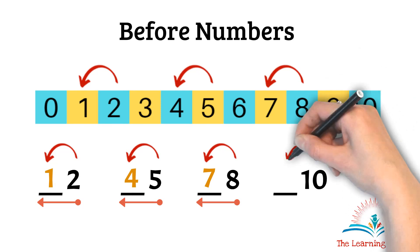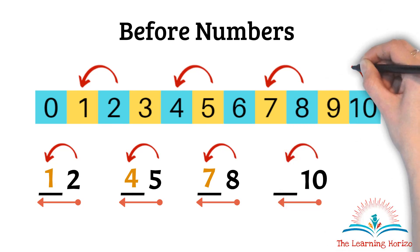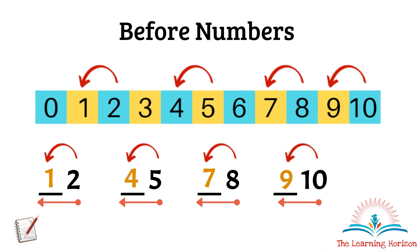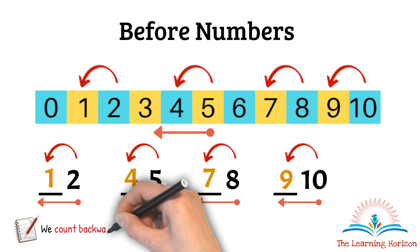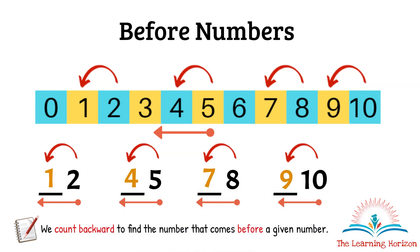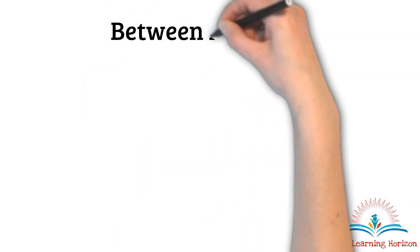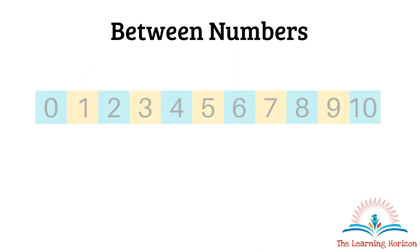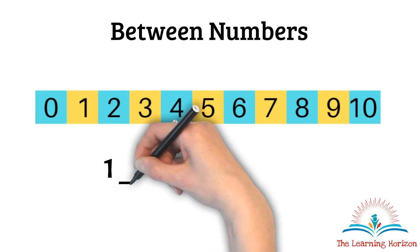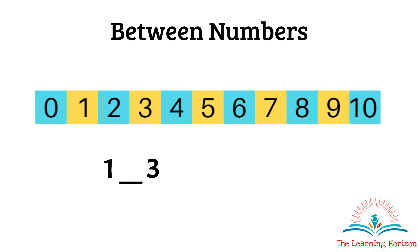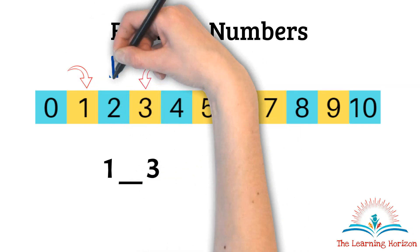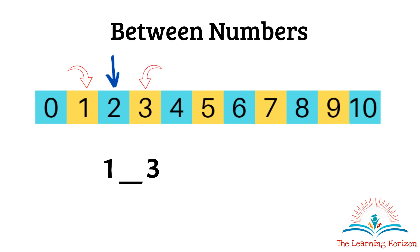Which is the number that comes before 10? It is 9. As you observe, we always count backward to find the number that comes before a given number. Now let us understand the concept of between numbers. Which is the number that comes between 1 and 3? I'll mark 1 and 3 — as you see, 2 is the number that comes in between 1 and 3.